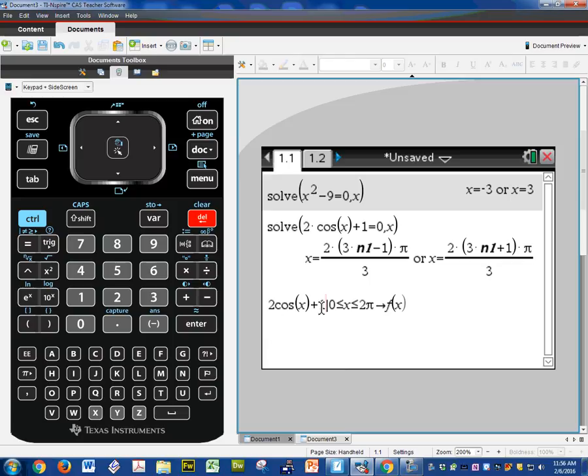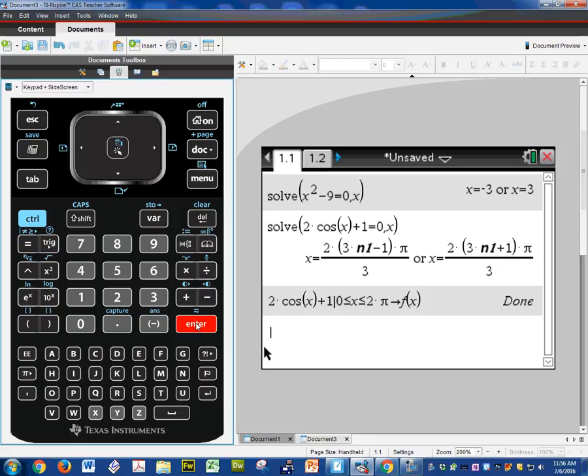So 2 cosine x plus 1 on the closed interval from zero to two pi is now going to be called f of x. Make sure and get rid of that equal sign. Enter.